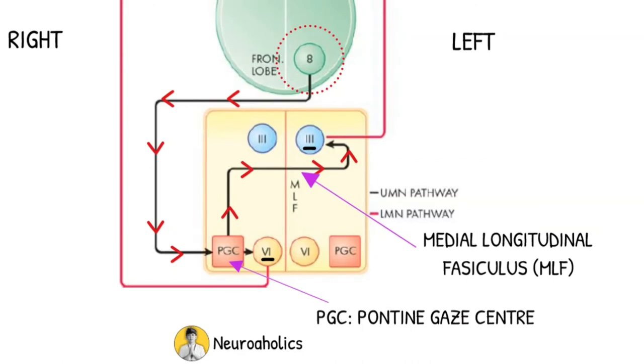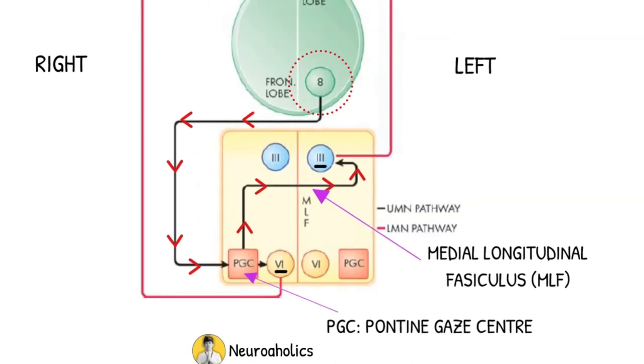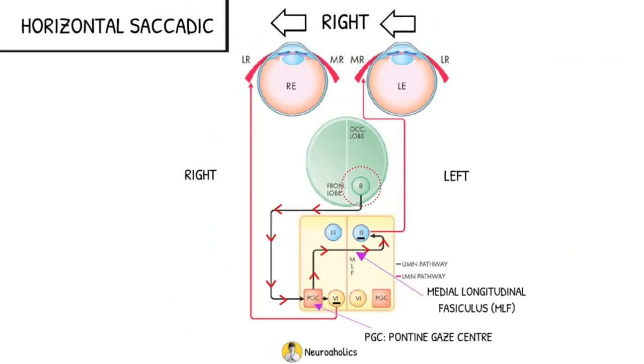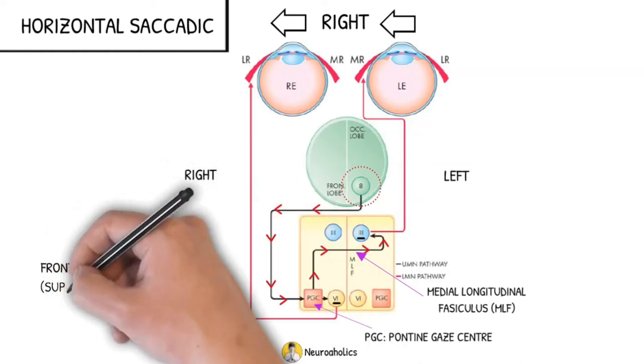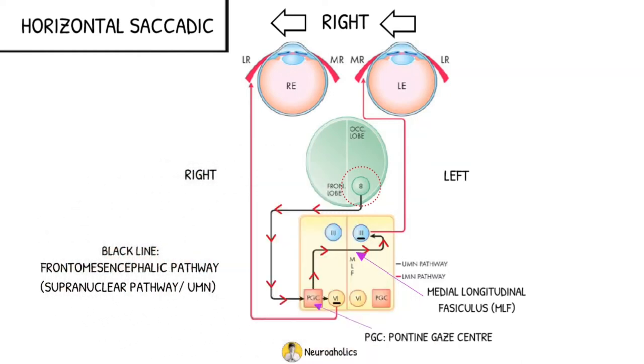In other words from the right pontine gaze center, the nerves pass through the medial longitudinal bundle to the left 3rd cranial nerve nuclei. Till here is the supranuclear pathway. This is why this is also called the frontomesencephalic pathway, or also called supranuclear pathway or upper motor neuron.